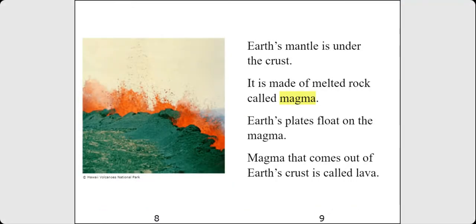Earth's mantle is under the crust. It is made of melted rock called magma. Earth's plates float on the magma. Magma that comes out of Earth's crust is called lava.